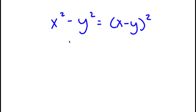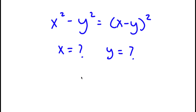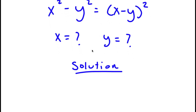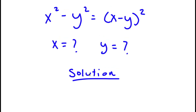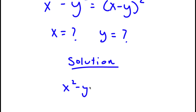In this problem I have x squared minus y squared is equal to x minus y squared, and I want to find the value of x and y. For my solution, I'm going to first start by simplifying x minus y squared.